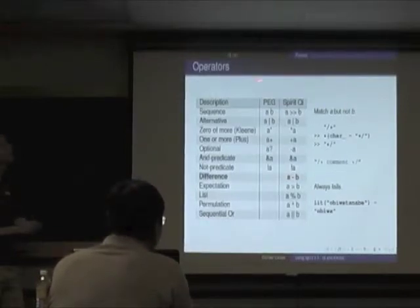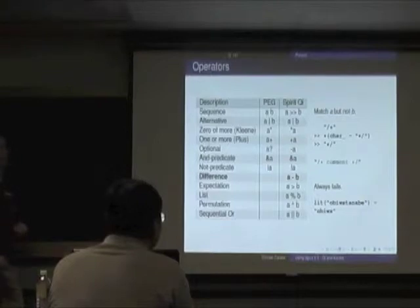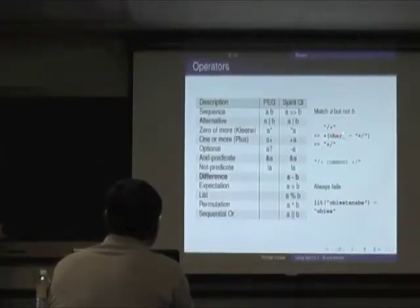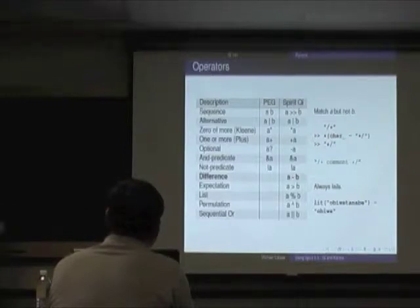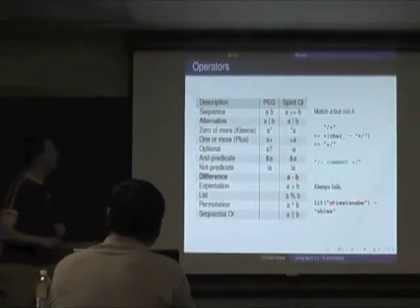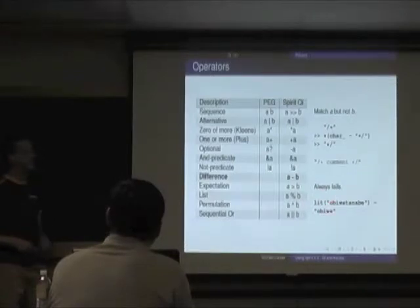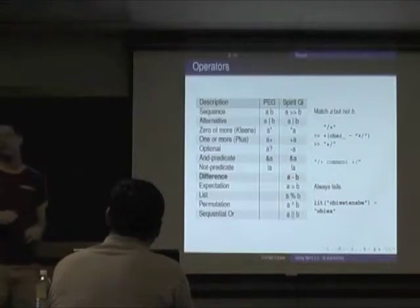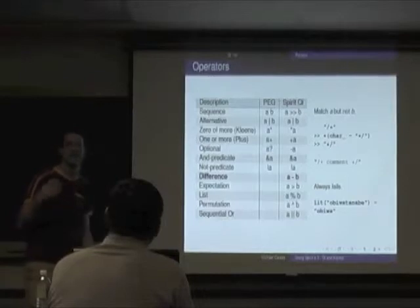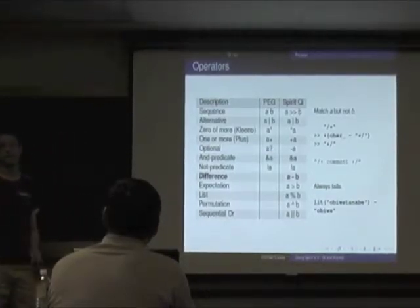Difference matches A but not B. Here we parse a C-style comment: we match characters that do not contain asterisk-slash, using kleene star to continue that over and over, then consume the closing comment. This is a different behavior from Classic Spirit — if you've been using Classic, this is something that will be a little different.